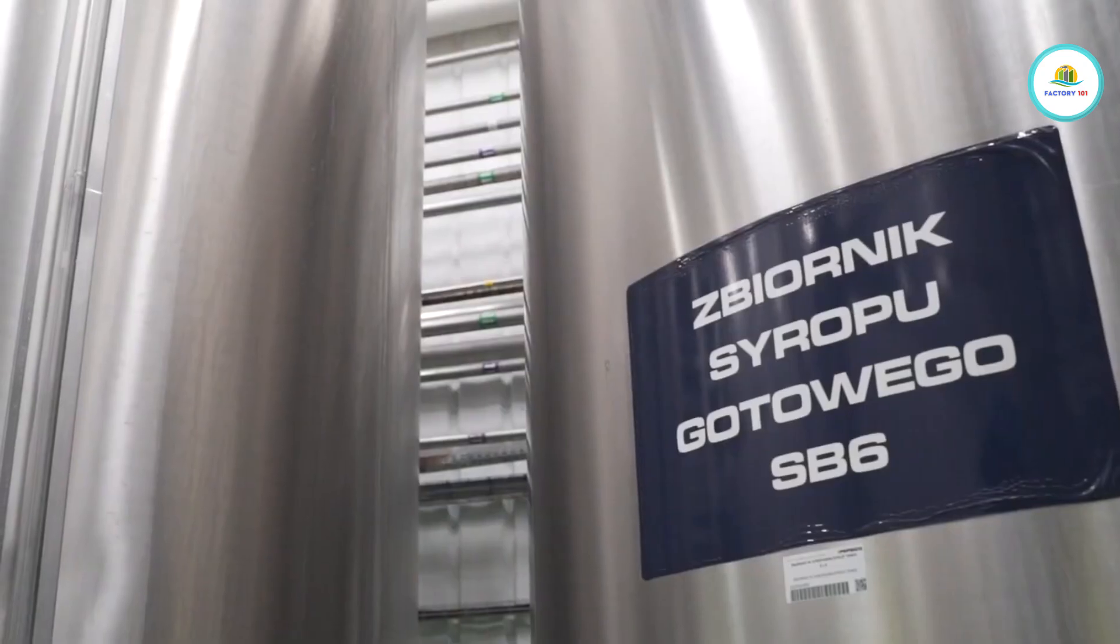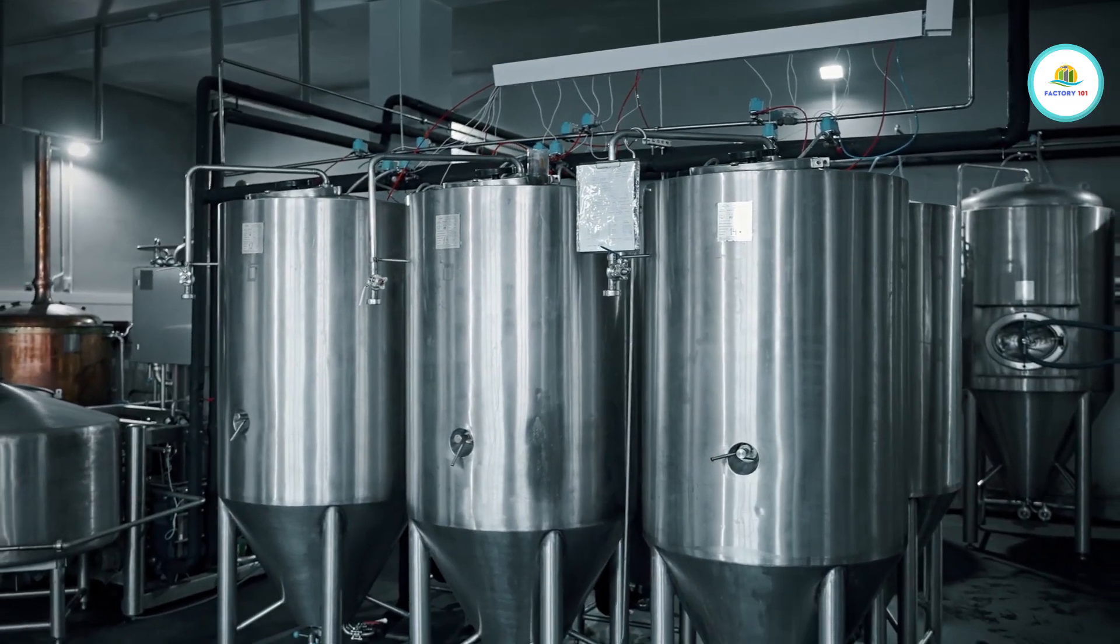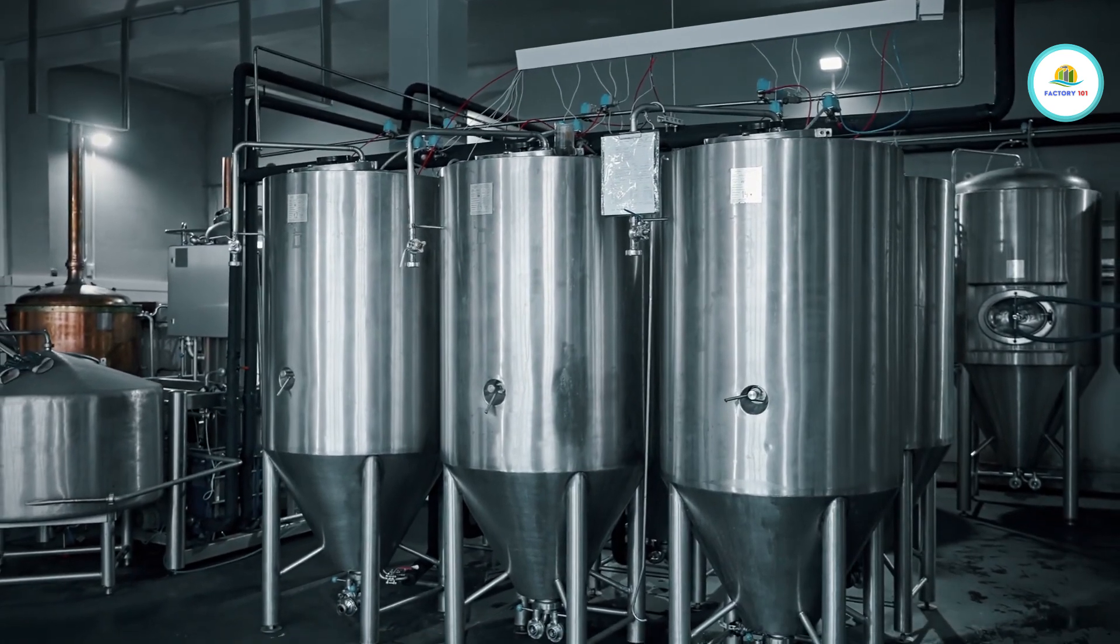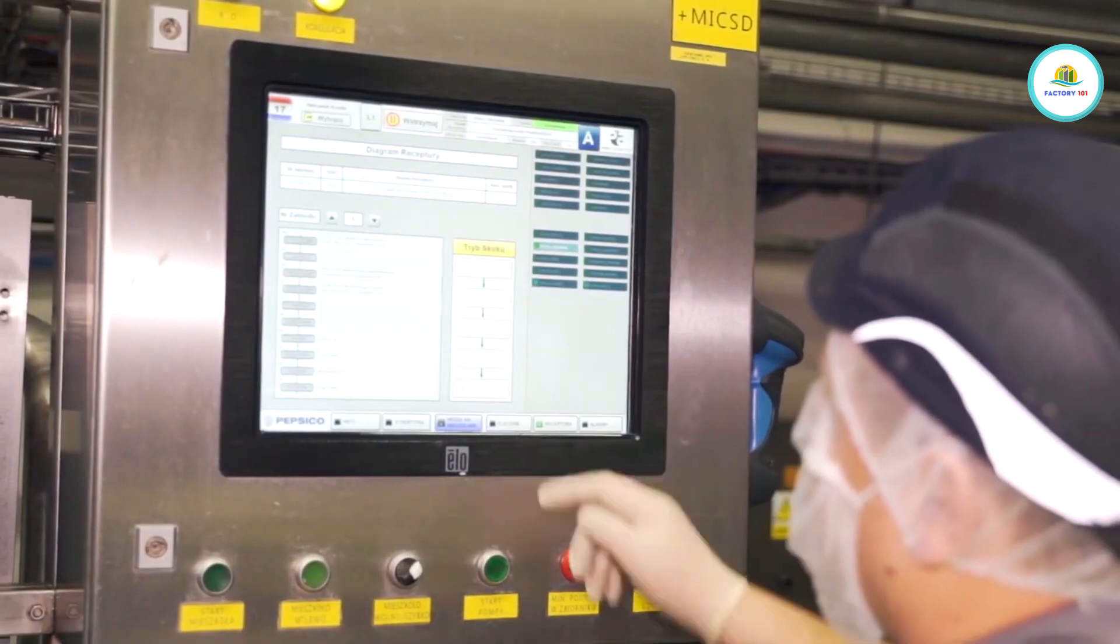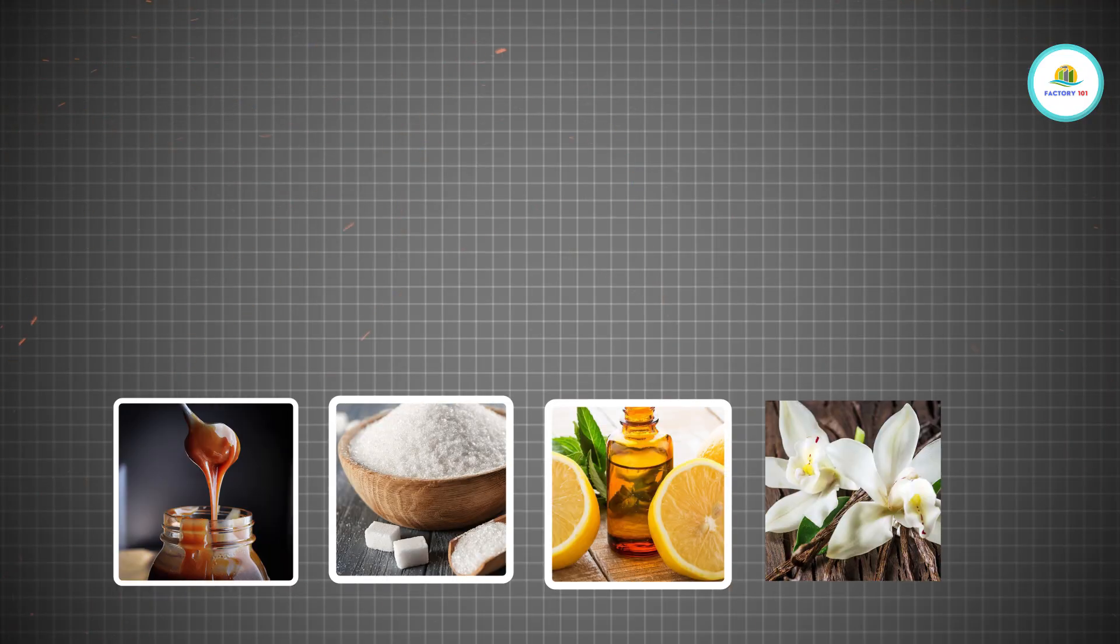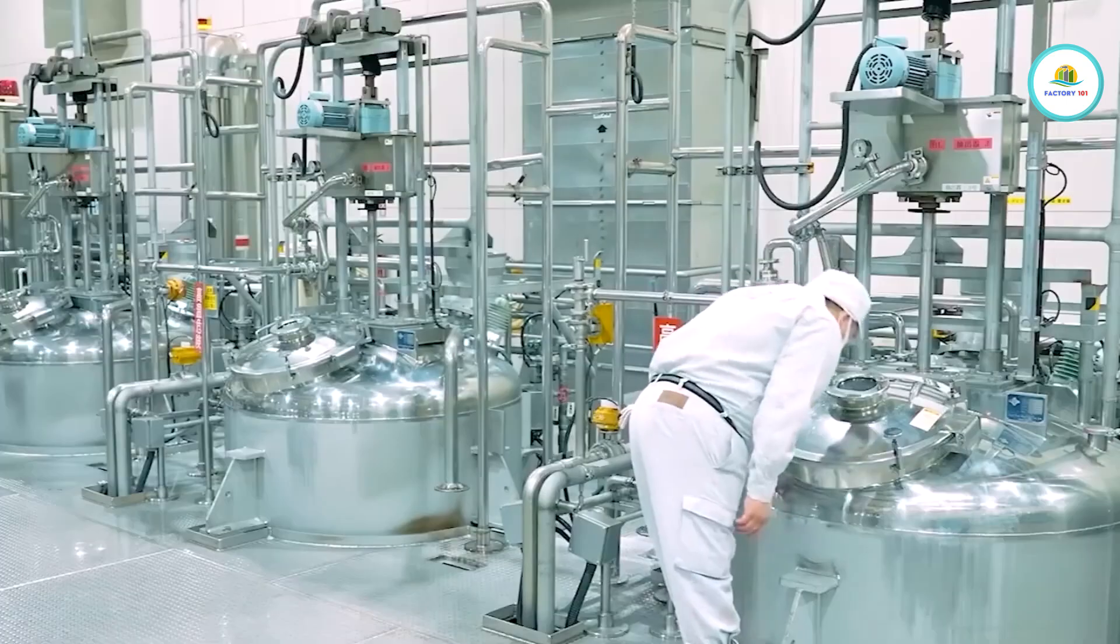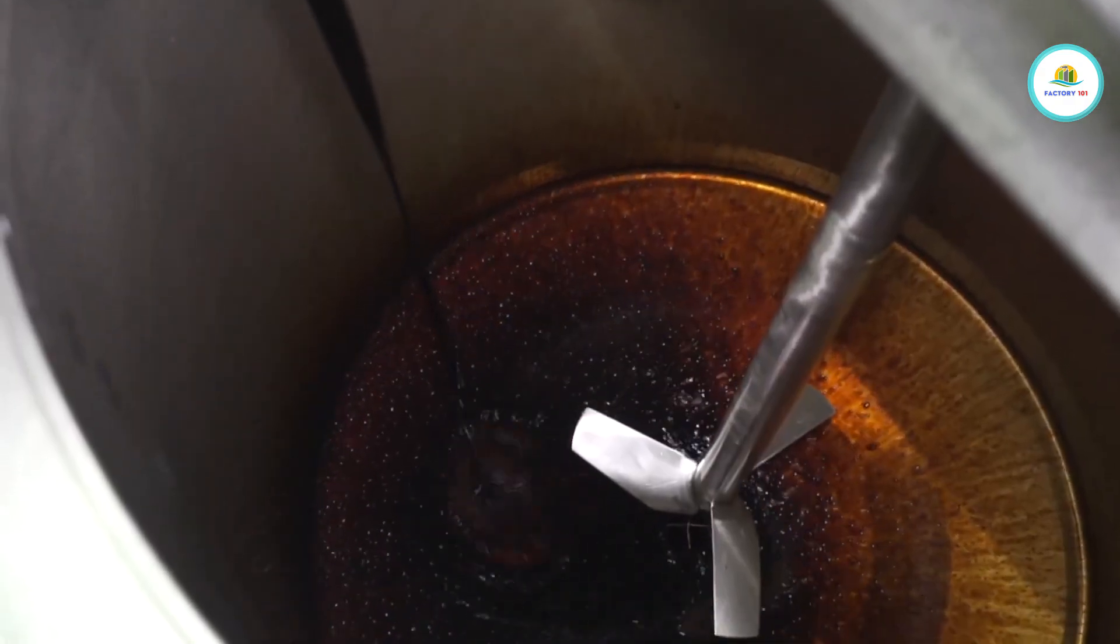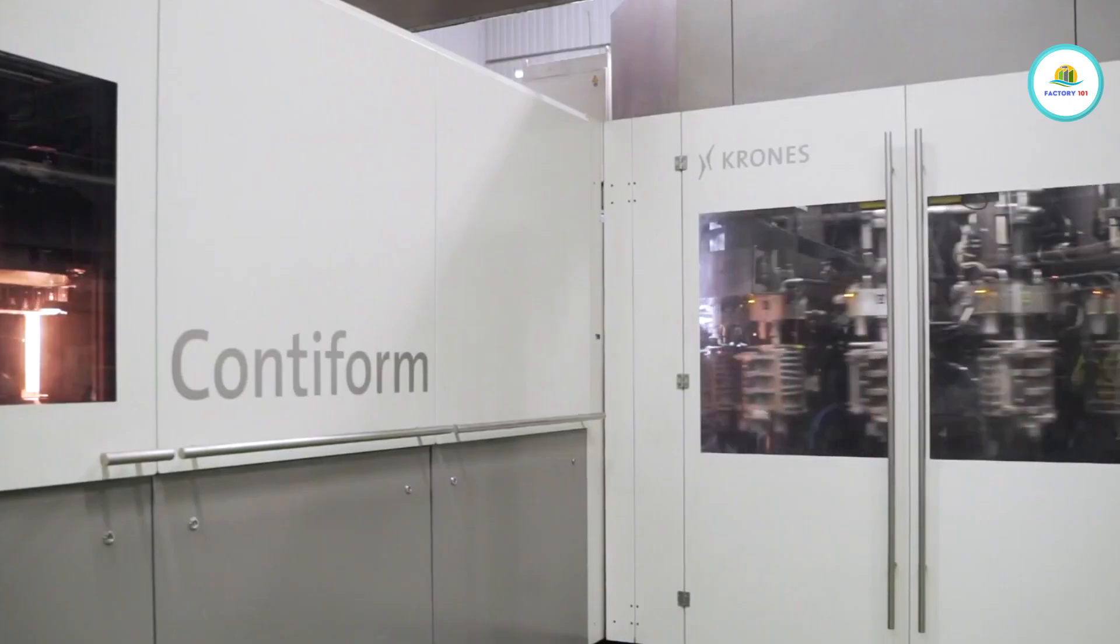Let's start with the syrup, the heart of every Pepsi bottle. The exact recipe? Still a closely guarded trade secret. Only a handful of people know the precise combination of caramel, sugar, citrus oils, vanilla, and something extra that gives Pepsi its signature taste. Just like Coca-Cola, Pepsi keeps its flavor base concentrated, and then it's blended at bottling facilities across the world.